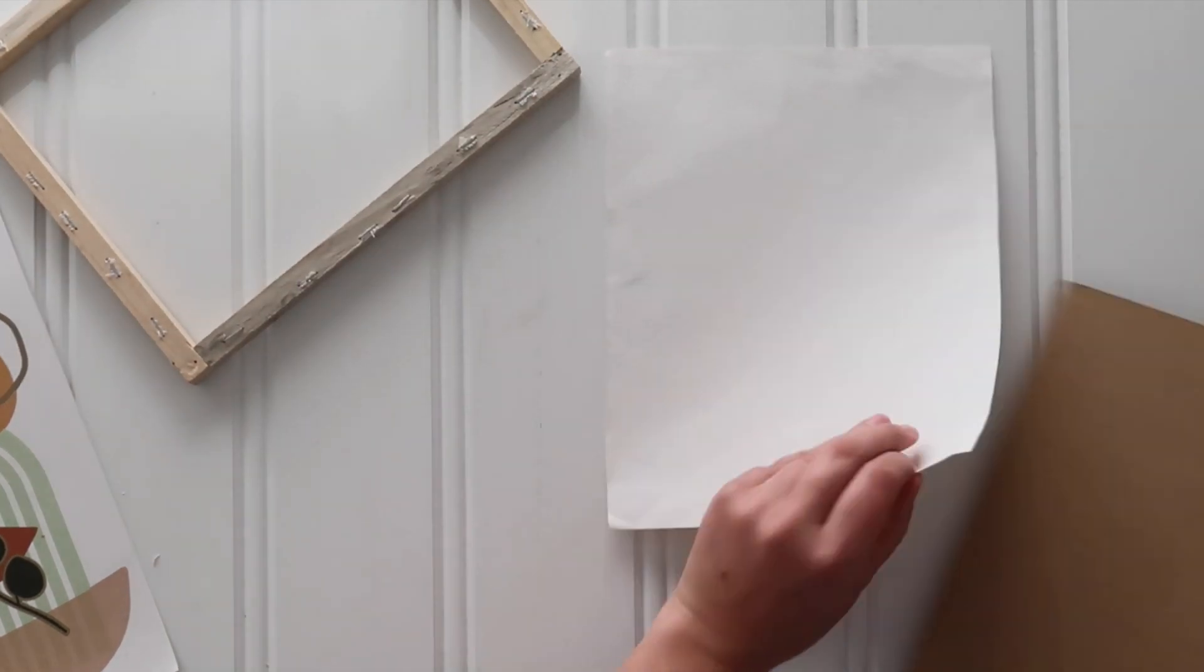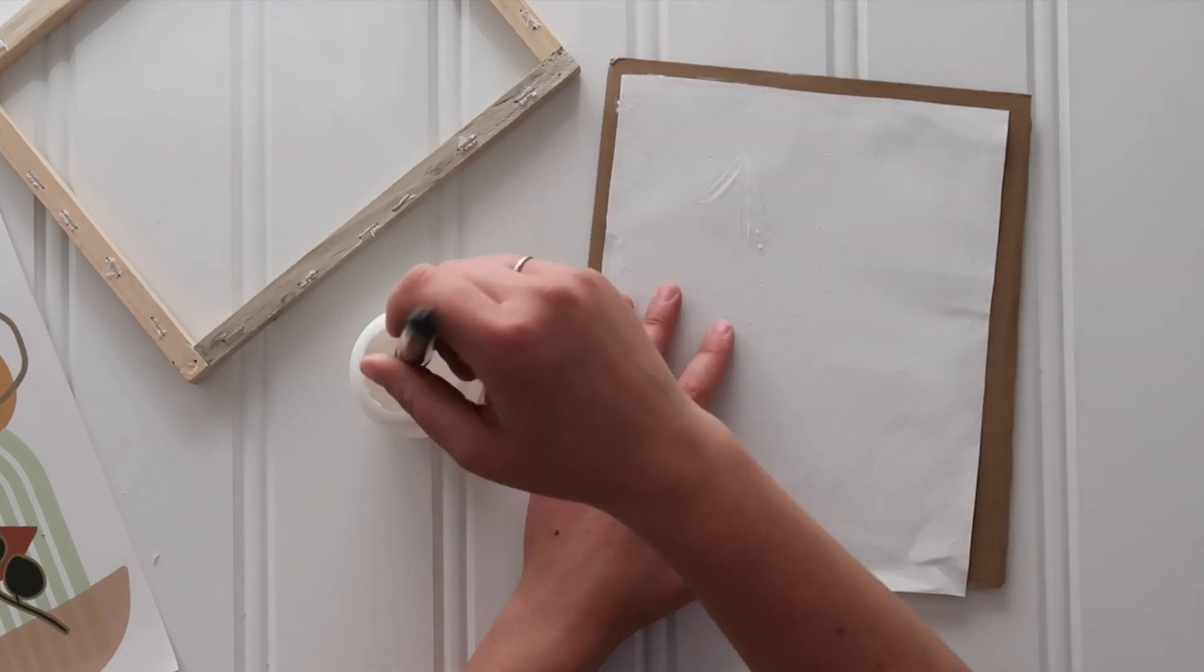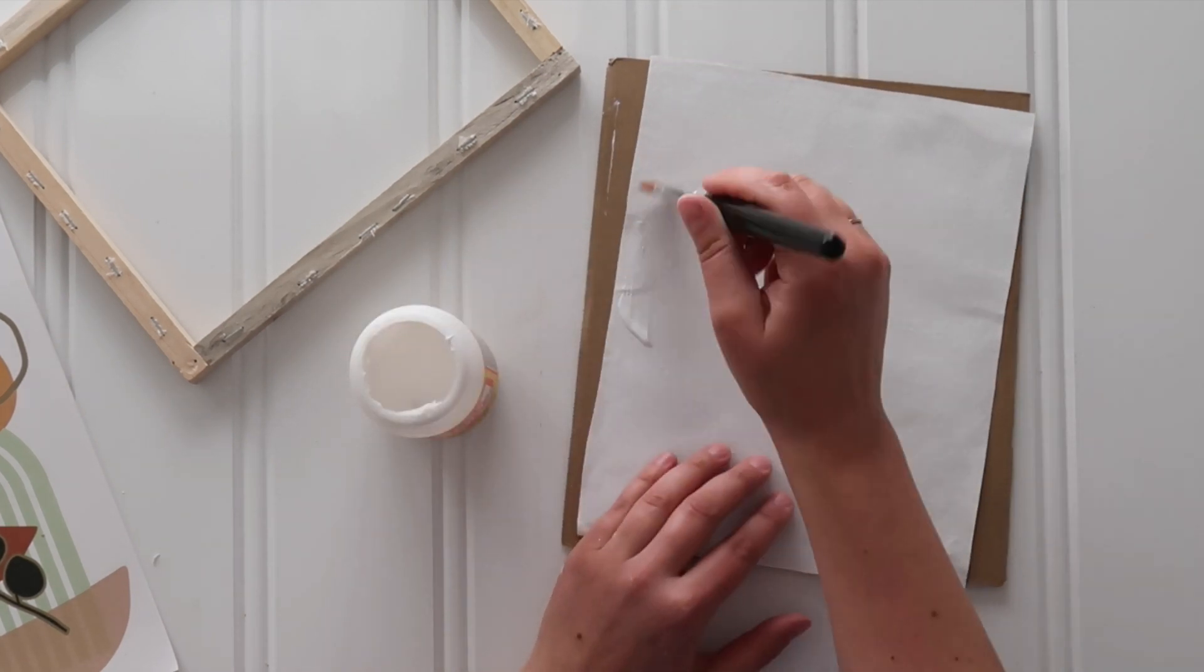Then I grabbed some Mod Podge—I use Mod Podge Matte for this project—and I applied a solid coat of Mod Podge to the entire canvas. And here's why.